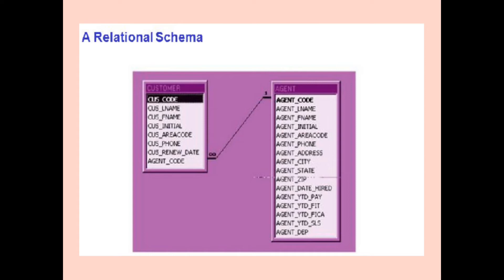The second concept is domain. A domain is a pool of values from which the actual values present in a given column are taken. For example, the teacher number column TNO is taken from all valid teacher numbers, so T01 and T02 are the domain of teacher numbers. The next concept is column, which we have already read.